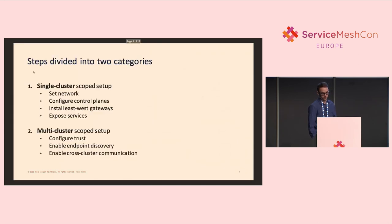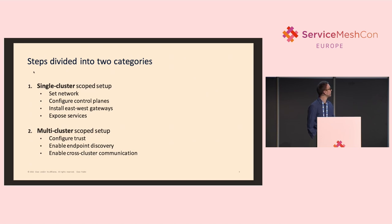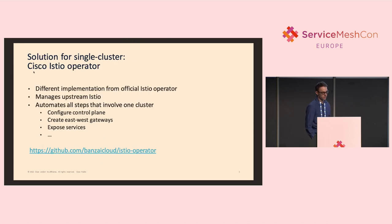Let me introduce a possible solution by first dividing all these manual steps into two categories. The first category is easy — it involves only one cluster, like installing the Istio control plane or installing the east-west gateways. The second category involves some kind of configuration between the clusters, like configuring the trust relationship between the clusters or enabling cross-cluster endpoint discovery. To solve the first category is not that hard — it could be done many ways. We opted to go with a Kubernetes operator-based solution, more specifically the open-source Cisco Istio operator.